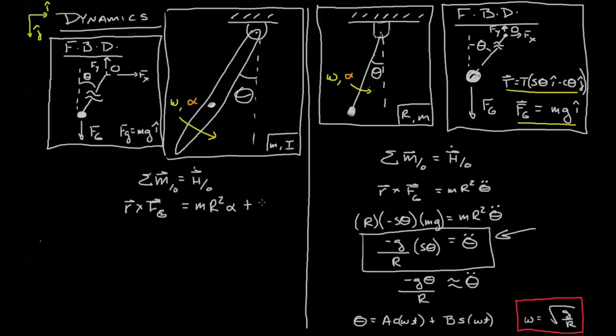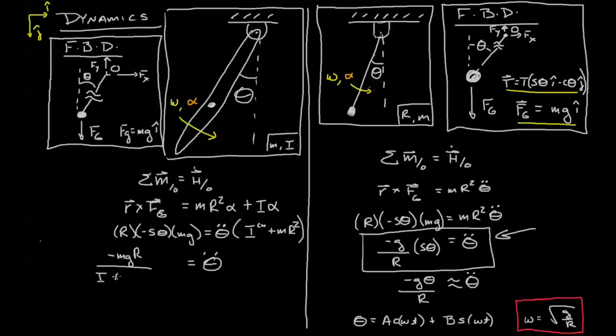But we'll also have a change in angular momentum due to the polar moment of inertia, which is I combined with the change in angular velocity or I alpha. We get the radius times negative sine theta times mass times gravity, and on the right hand side we'll have theta double dot times the quantity I of the center of mass plus m r squared. We isolate theta double dot and get theta double dot equals negative m g r over I plus m r squared times sine theta.